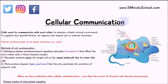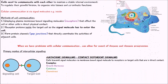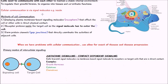Today's video we're going to be talking about cellular communication. It's important that cells are able to communicate with each other to maintain a stable environment, to regulate their growth and division, and to organize the tissues and coordinate functions. An example of cellular communication is with a signal molecule.